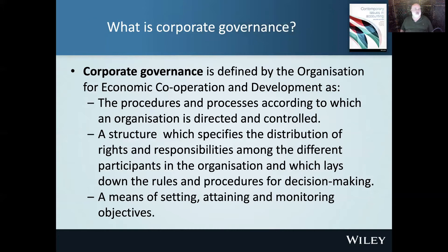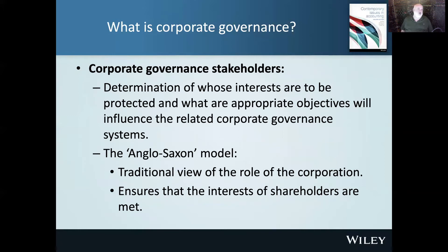So, what is corporate governance? It's the procedures and processes according to which an organisation is directed and controlled — it's really about how the board and management act. We can define it as a structure which specifies the distribution of rights and responsibilities amongst the different participants in the organisation: what's management's responsibility and what's the board's responsibility. As part of this, we can set, attain, and monitor various objectives. Determination of whose interests are to be protected and what are appropriate objectives will have an influence on corporate governance.